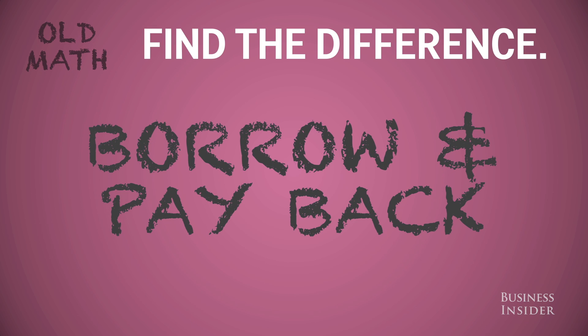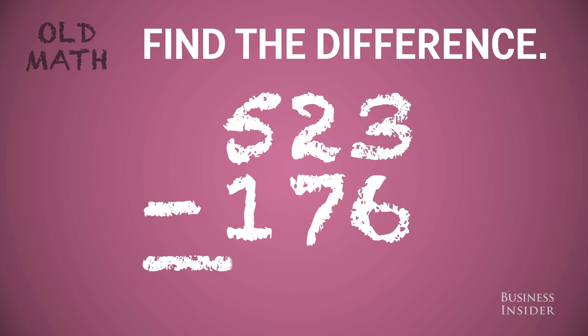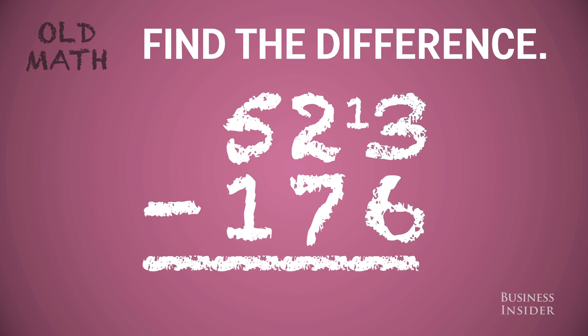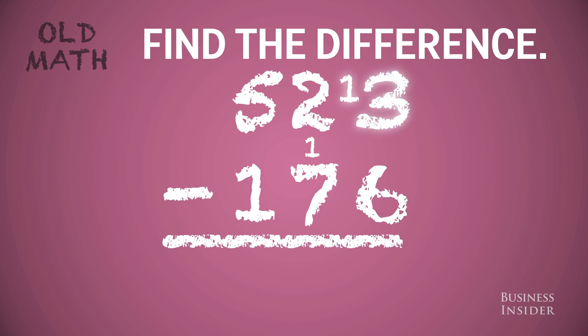If you learned subtraction in the 1950s, you may have learned the borrow and pay back method. Start on the right in the ones place. Since you can't take 6 from 3, you need to borrow from the 10s to make this 13, and pay it back by subtracting an additional 1 here. Now 6 from 13 is 7.